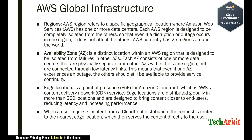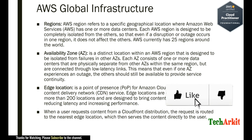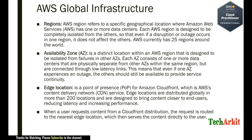An AWS region refers to a specific geographical location where Amazon Web Services has one or more data centers. Each AWS region is designed to be completely isolated from the others, so that even if a disruption or outage occurs in one region, it does not affect the others. AWS currently has 25 regions around the world.